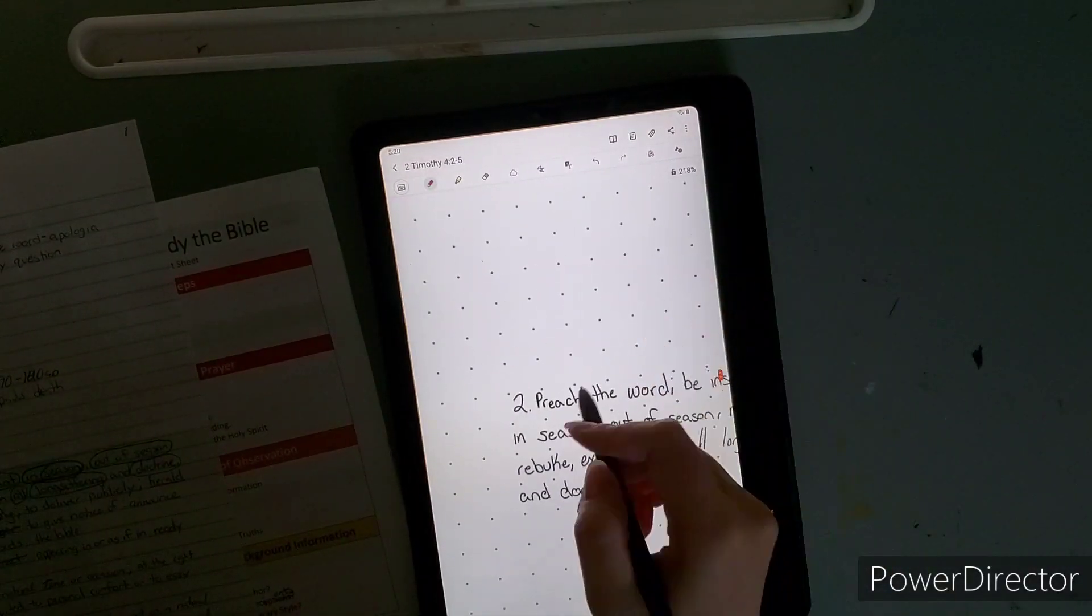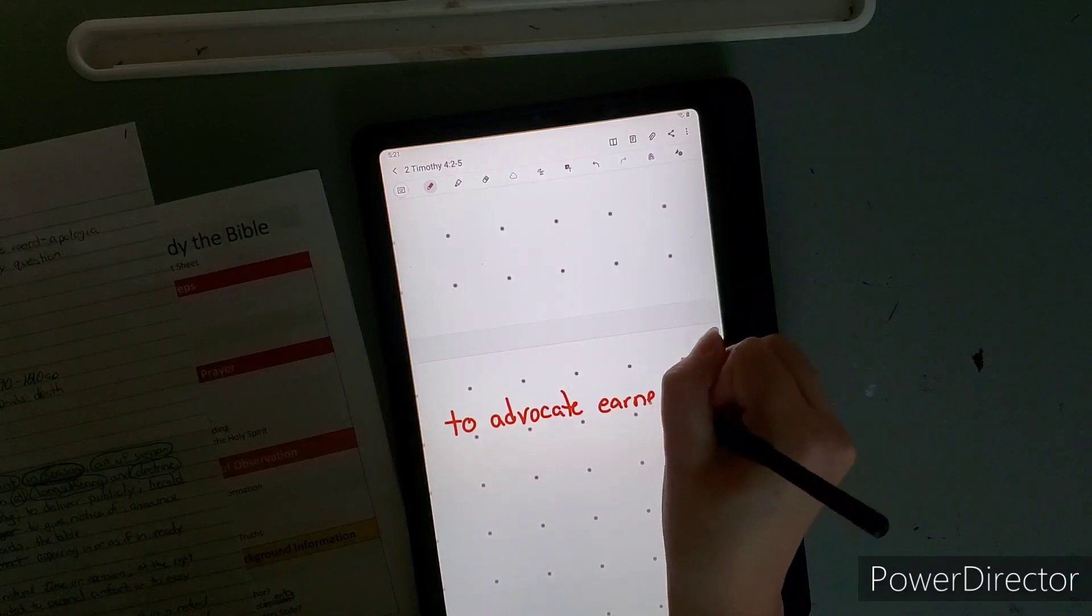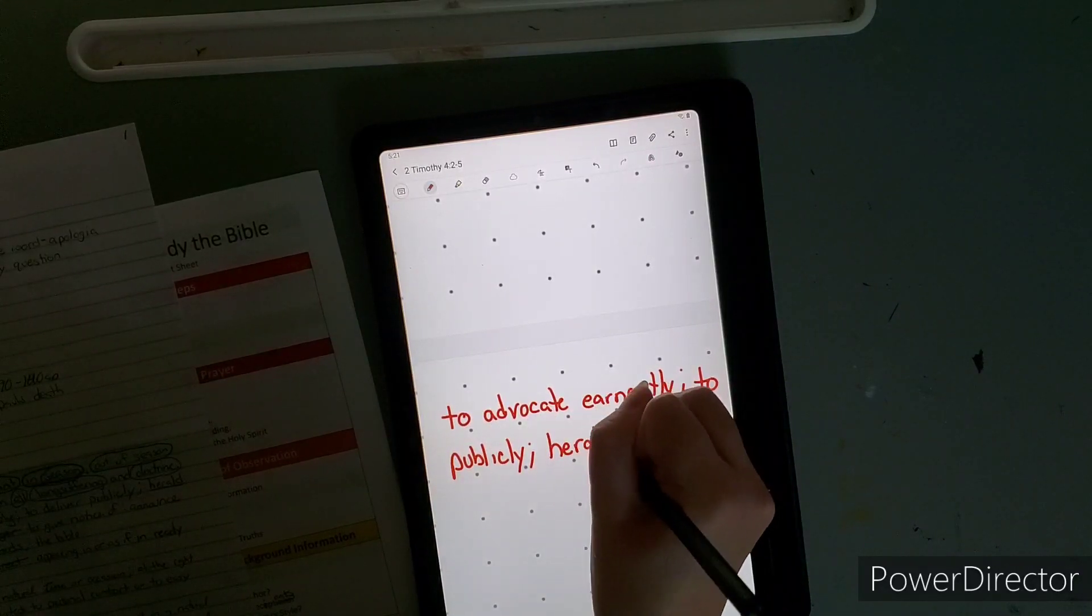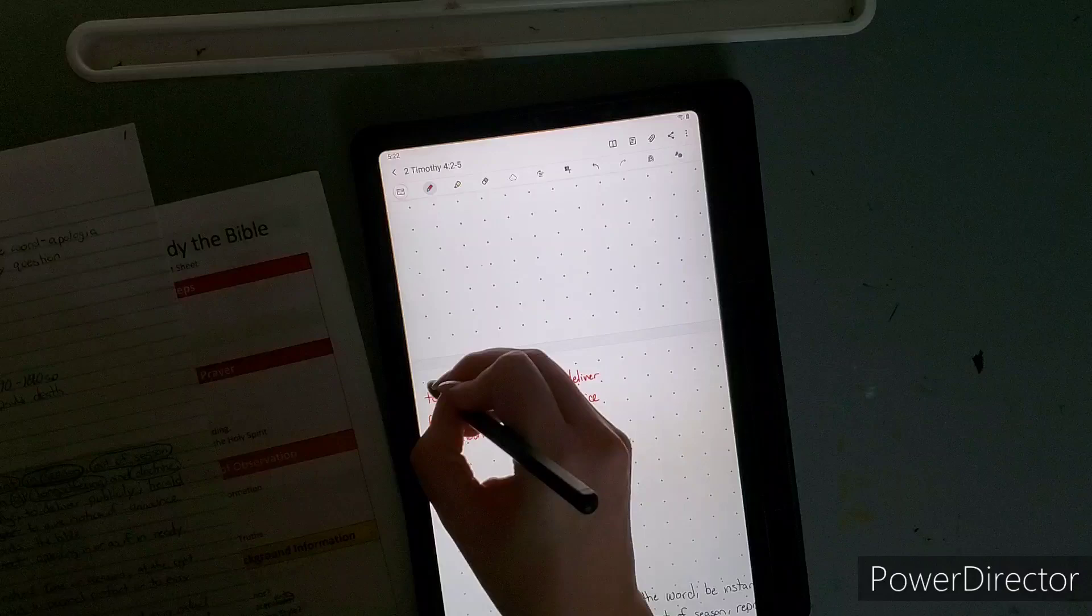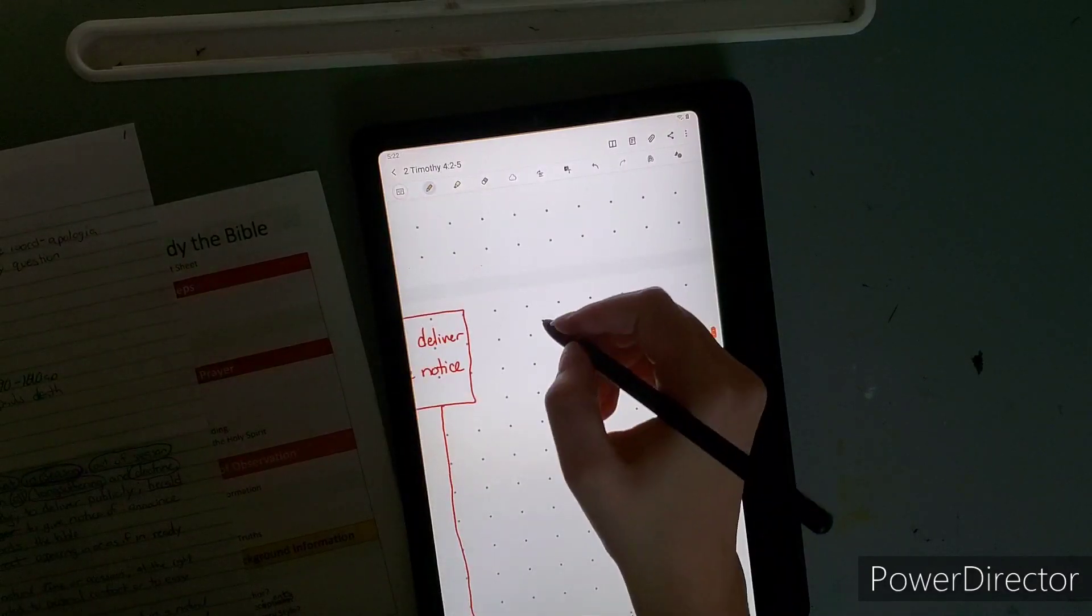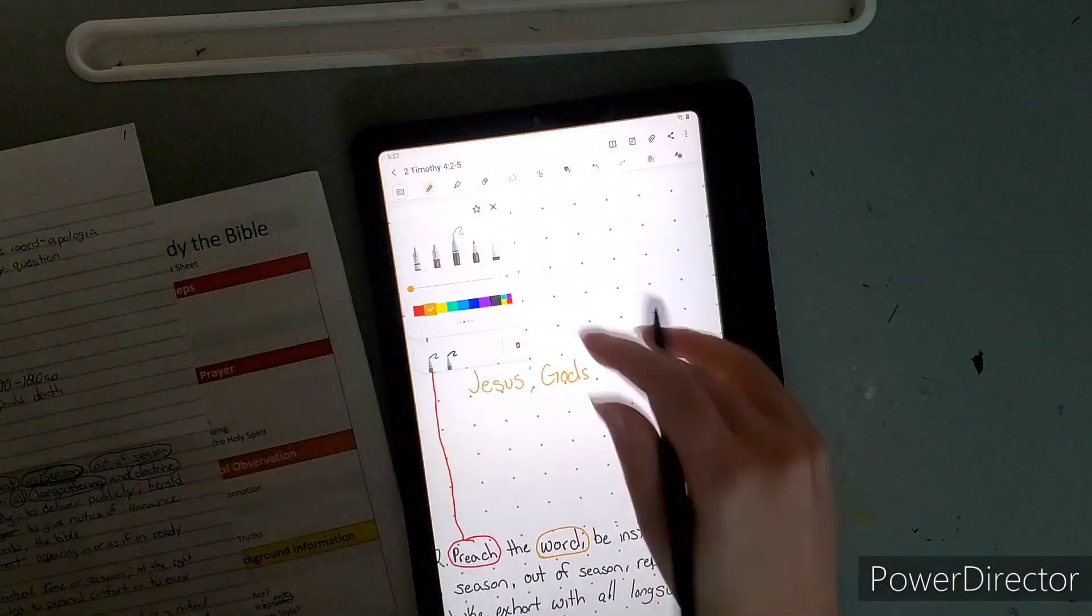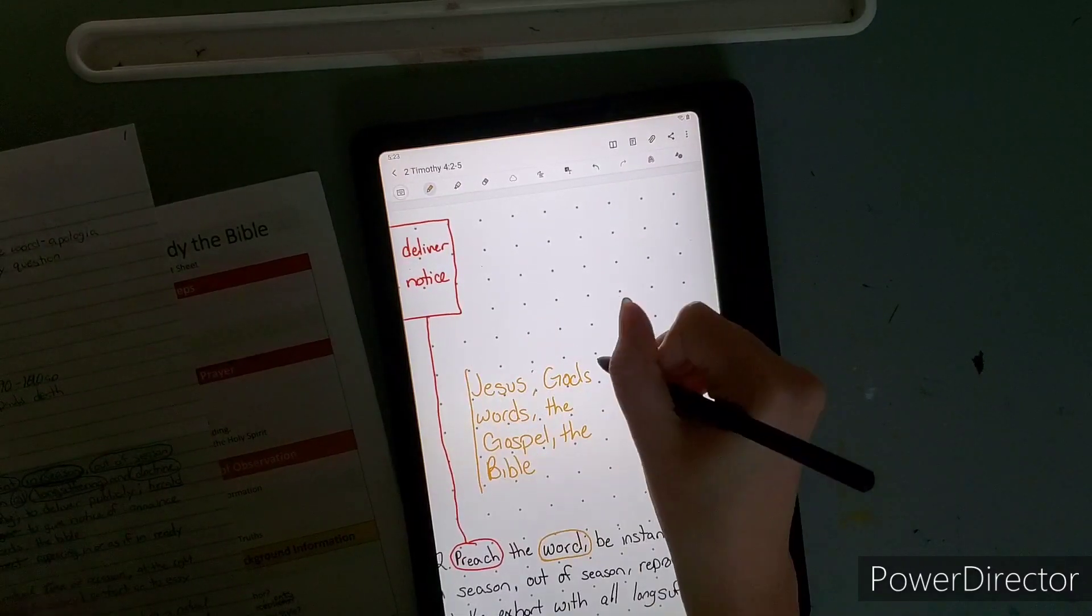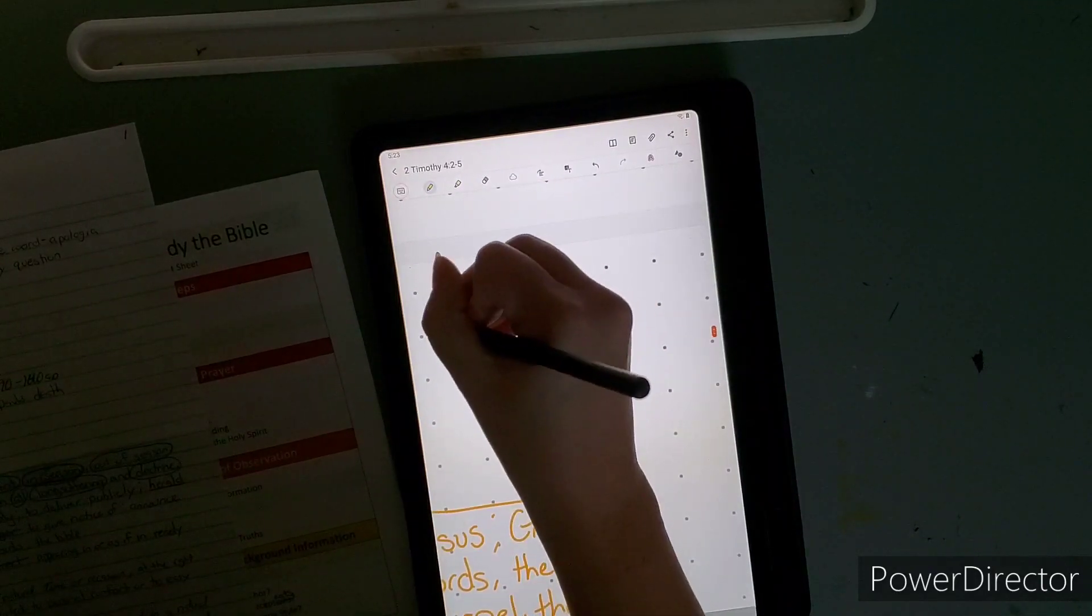Let's jump into some scripture. Verse 2: Preach the word, be instant in season, out of season, reprove, rebuke, exhort with all long suffering and doctrine. Preach is to advocate earnestly, to deliver publicly. Herald is to give notice or announcement. Preaching is not just done by a pastor or an evangelist, it should be done in your everyday life, which is basically advocate Jesus.